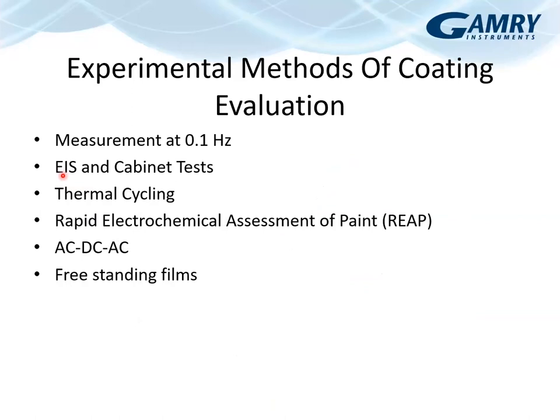EIS can also be combined with other testing: salt spray cabinet tests (measure EIS before and after cabinet exposure), thermal cycling (measure EIS between thermal cycles), the Rapid Electrochemical Assessment of Paint (REAP) test (with an application note available), and AC-DC-AC testing (an impedance test, then cathodic disbonding, then another impedance test). For freestanding films, measurements are made of coatings without substrates.